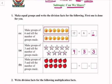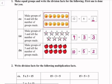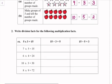First of all, we will count the total number of apples: 1, 2, 3, 4, 5, 6, 7, 8, 9, 10. The total number of apples are 10, and we have to make groups of 5. The total number of groups are 2, with 5 apples in each group.